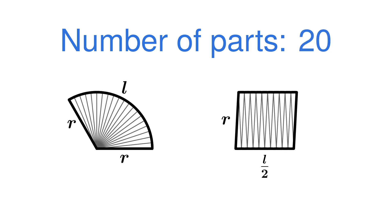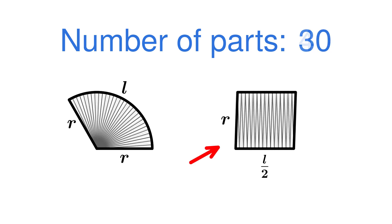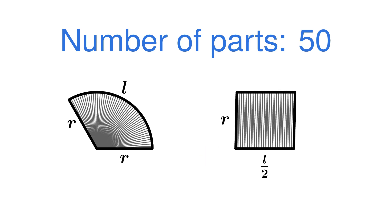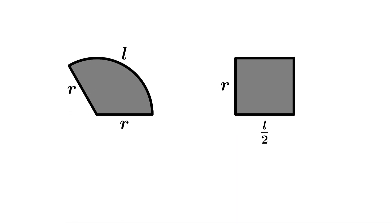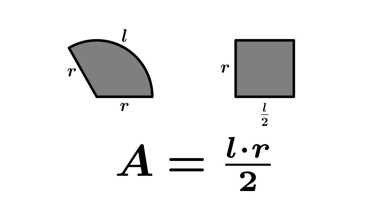We see that as the number of parts increase, the figure on the right looks more and more like a rectangle. And not just any rectangle, but a rectangle whose height is r and width is l over 2. The area of that rectangle is l times r over 2, so the area of a circular sector is also l times r over 2.